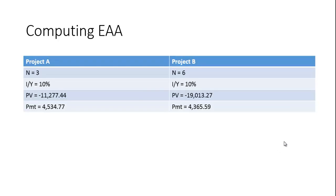Here I've shown you how you can do this on your financial calculator, but you could certainly do this in Excel or any other spreadsheet. What we're trying to find is the annuity, or in terms of the financial calculator, the payment PMT. N is three because the project lasts for three years, we have a ten percent cost of capital, and we're computing the annuity that would result from having eleven thousand two hundred seventy-seven dollars and forty-four cents in the account spread over three years.